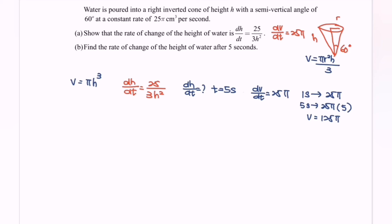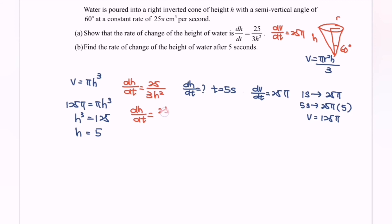Substituting into V equals πh³: 125π equals πh³, so h³ equals 125, giving h equals 5. Then substituting into dh/dt with h equals 5: dh/dt equals 25 over 3 times (5²), which gives 25 over 75. So finally, dh/dt equals 1/3 cm per second when t equals 5 seconds.